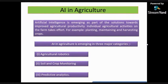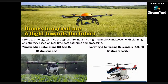Agriculture is a backbone industry of any nation. It is time-consuming, labor-intensive, and money-intensive. Individual agricultural activities on the farm involve planting, maintaining, and harvesting crops. Artificial Intelligence is emerging as part of the solution towards improved agricultural productivity. It is mainly classified into three categories: Agriculture Robotics, Soil and Crop Monitoring, and Predictive Analysis.